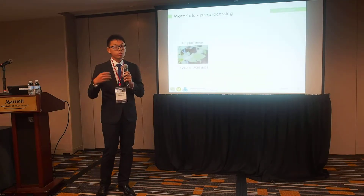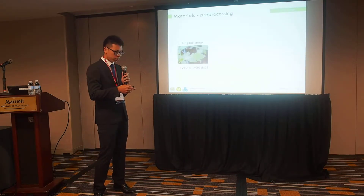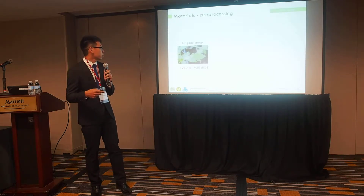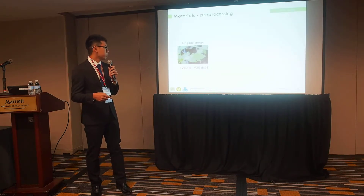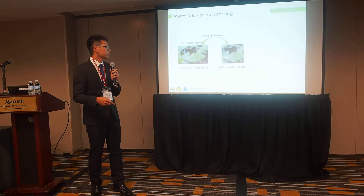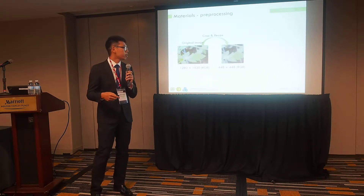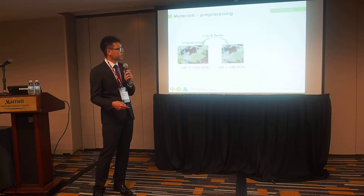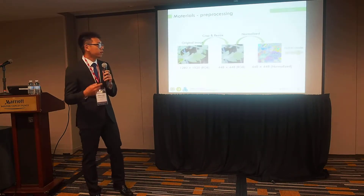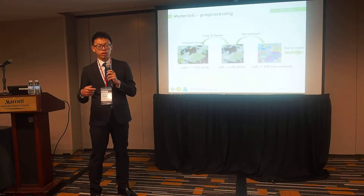Before we use the images for training, we need to do some pre-processing. We start with an original image of size 1280 by 1920 RGB. Then we do crop and resize to a 448 by 448 RGB image. Last, we normalize the image. Finally, we can send this image to the model and start the training.